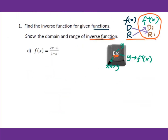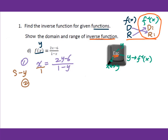Now let's find the inverse of f(x) equals (2x minus 6) over (1 minus x). Step 1, exchange x and y: x equals (2y minus 6) over (1 minus y). Step 2, solve for y. Since this is a fraction, we eliminate it by cross multiplying: x times 1 is x, and x times negative y is minus xy.